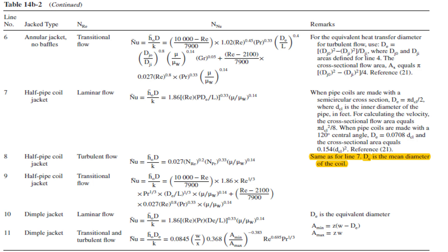Similarly, there are correlations for the half pipe coil jacket covering laminar flow, turbulent flow, and transitional flow. For the dimple jacket, this type is used for laminar flow, transitional flow, and turbulent flow.